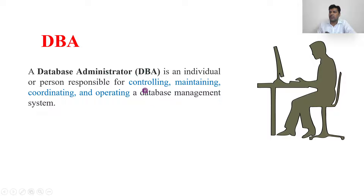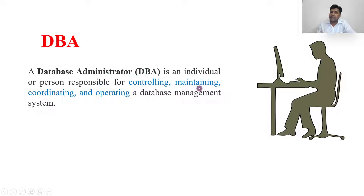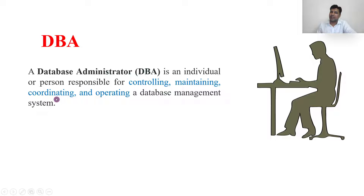Controlling means he will abstract the data and give only some access to the data. By this, he can control different users in different ways — data abstraction. Second, maintenance: suppose if your system is hanging, or the server has less storage, or more storage has to be added, or any update is required in the softwares — all these things are taken care of by the DBA. Coordinating means connecting the server and client.